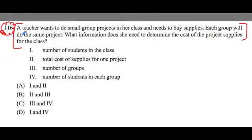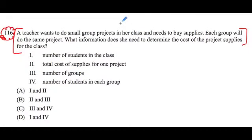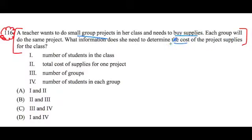First thing I'm going to do when I read this over is visualize what's happening. So I'll read it over and try to identify the key images to focus on. A teacher wants to do small group projects in her classroom and needs to buy supplies. Each group will do the same project. What information does she need to determine the cost of the project supplies for the class?